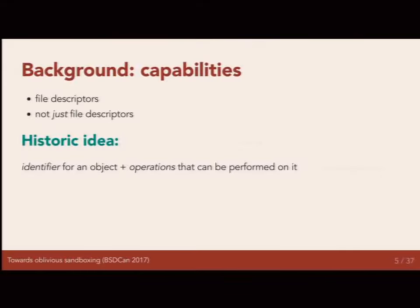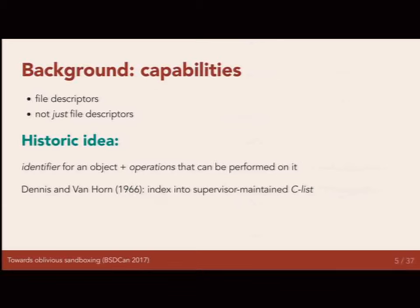Capability mode was part one. Part two is capabilities. Capabilities are file descriptors, but they're not just file descriptors. A long time ago, when Unix was still being conceived, there was this idea of a capability — something which is both an identifier for an object but also expresses the operations you can perform on that object. Dennis and Van Horn identified this as a very useful idea in the 60s, in hardware like the Burroughs 5000. These capabilities would be stored in a CList — a capability list — maintained by the supervisory part of the software, with non-supervisory software accessing it via an index into that list.